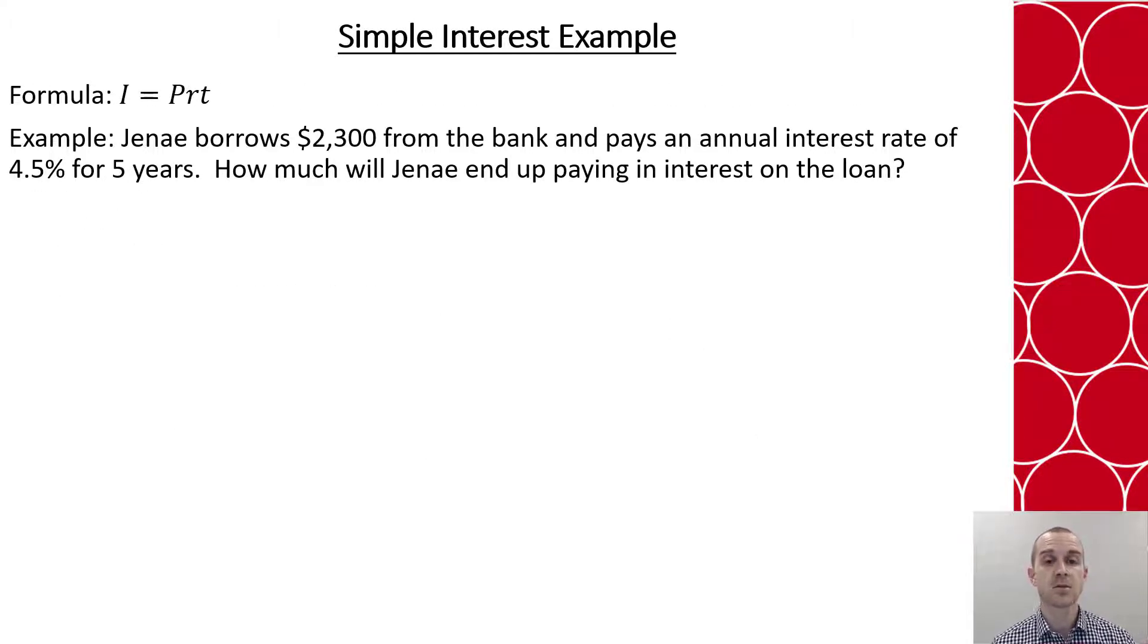Let's look at a few examples. Say that Janae borrows $2,300 from the bank and pays an annual interest rate of 4.5% for 5 years. How much will Janae end up paying in interest on the loan? So first we start with our interest. Here it says how much will she pay? So that's our unknown piece of this formula in this case.